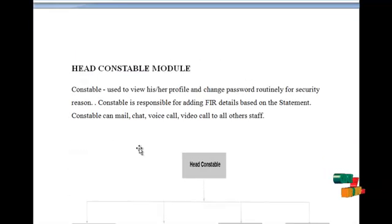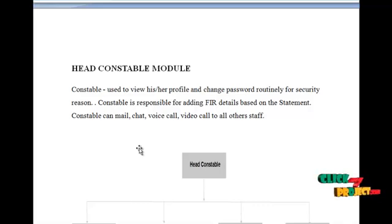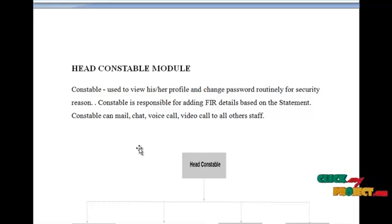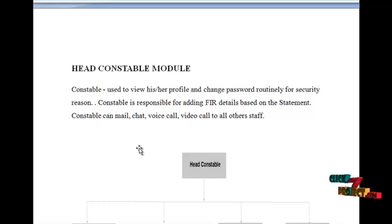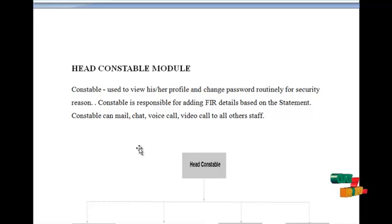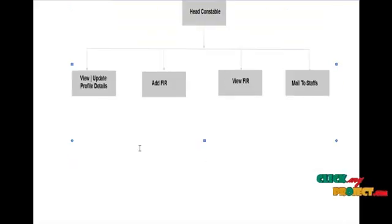The next model is the head constable model. Head constable can view and update their profile details and change password routinely for security reasons. Head constable is responsible for adding FIA details based on the statements. Head constable can mail, chat, or voice call with other staff through Skype services or through mail services. The data flow diagram of the head constable is as shown below.